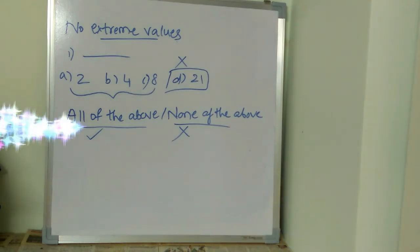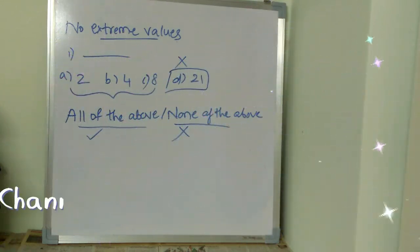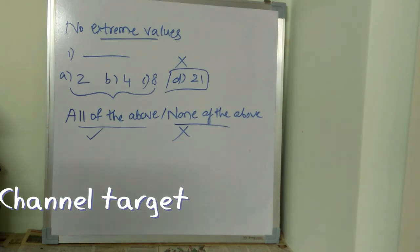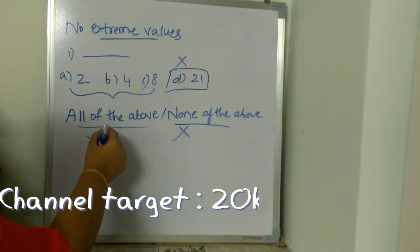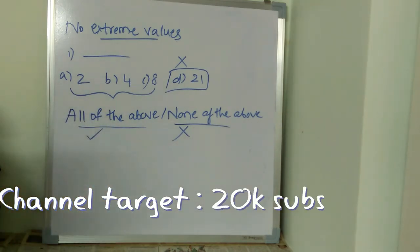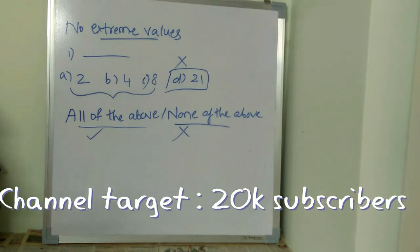Always go for 'all of the above' and never go for 'none of the above.' If the question has 'all of the above' as an option and you know or can verify the correct answer matches, choose 'all of the above.' That's the second advantage of this cheat code.